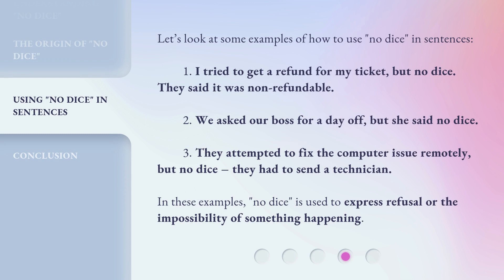Let's look at some examples of how to use 'no dice' in sentences. 1. I tried to get a refund for my ticket, but no dice — they said it was non-refundable. 2. We asked our boss for a day off, but she said no dice. 3. They attempted to fix the computer issue remotely, but no dice — they had to send a technician. In these examples, 'no dice' is used to express refusal or the impossibility of something happening.